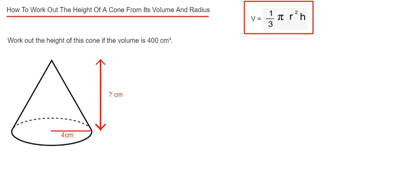So let's have a look at the example here. We've got to work out the height of the cone if the volume is 400 centimetre cubes, and we're also given the radius of the cone in the diagram, which is 4 centimetres. So the first thing we can do is substitute the 4 and the 400 into the formula in the red box.